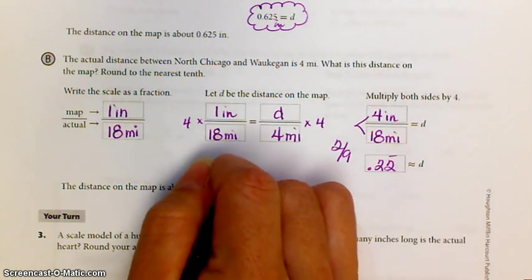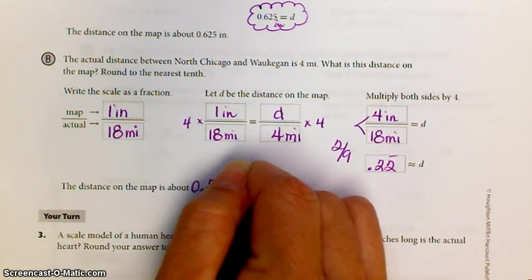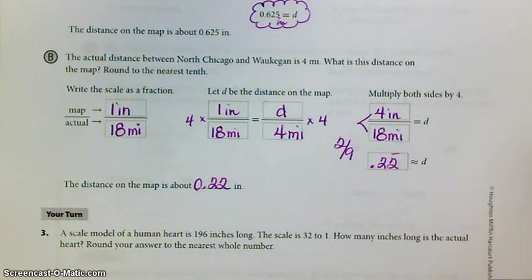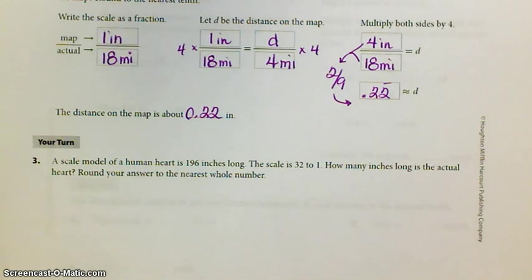So, the distance is about 0.22 inches if you round it off a little bit. Your turn. Well, really, our turn. We'll keep doing these together.